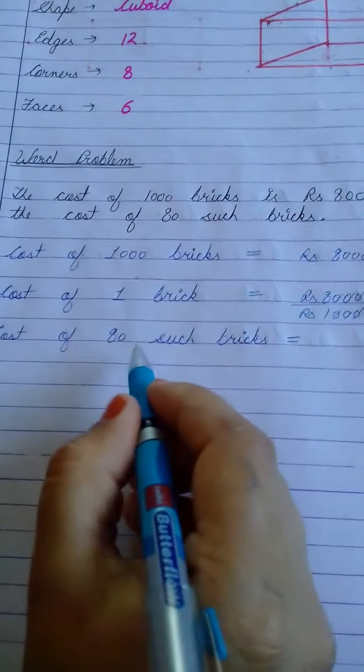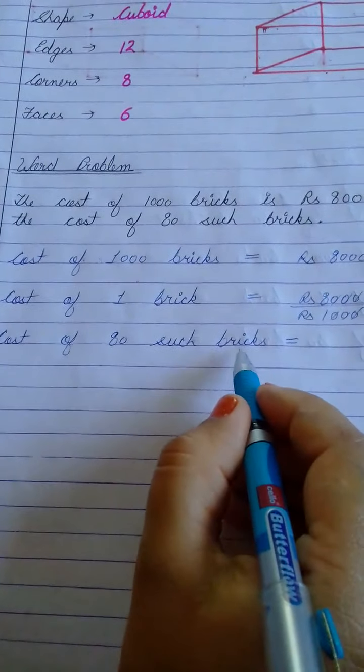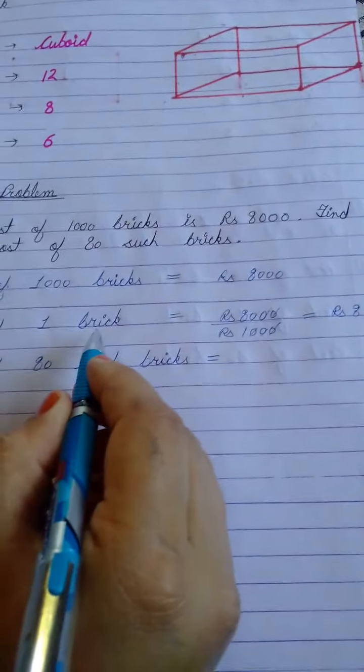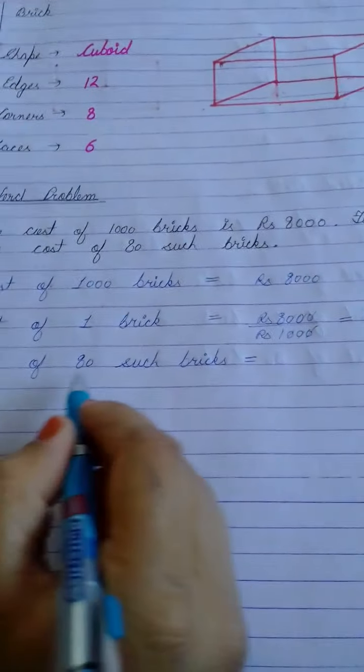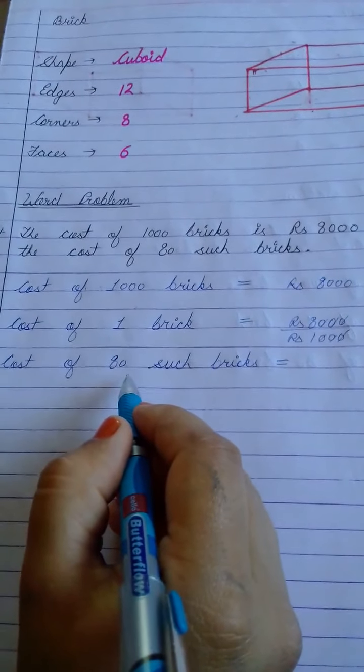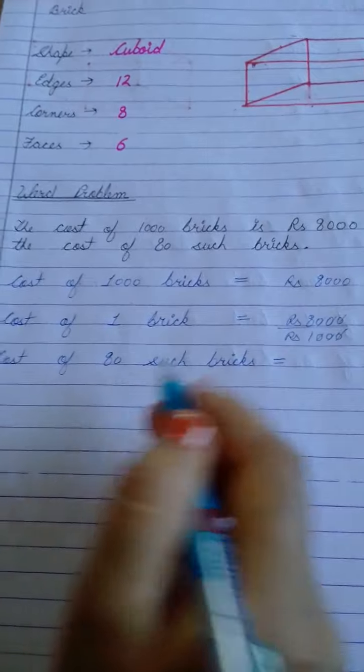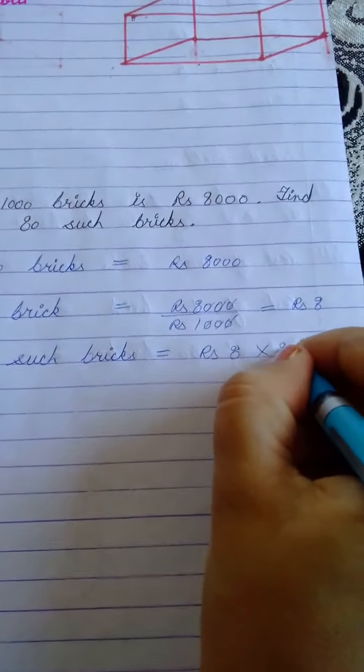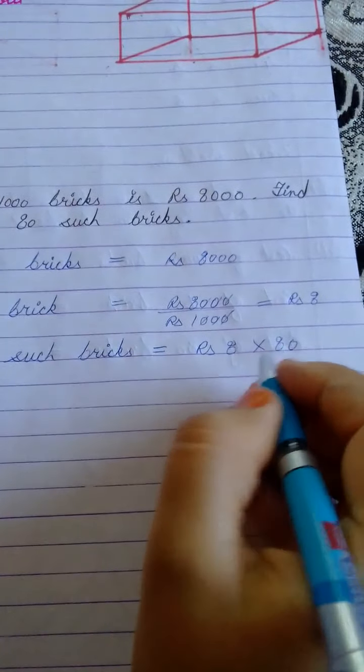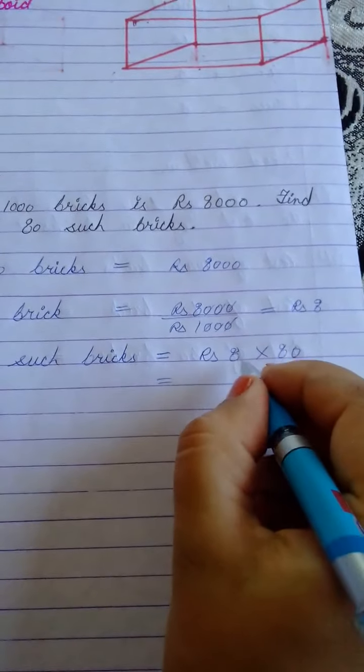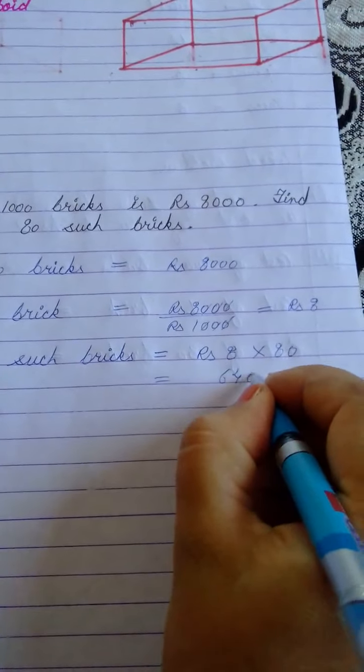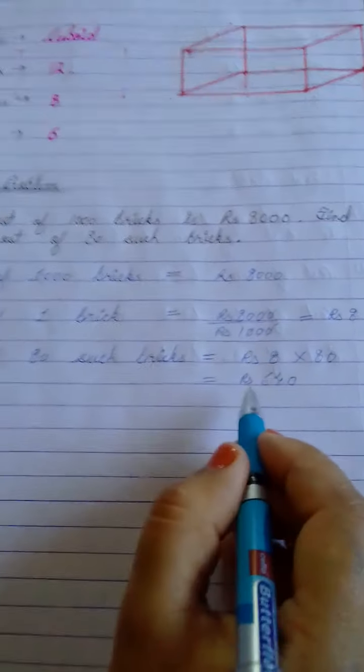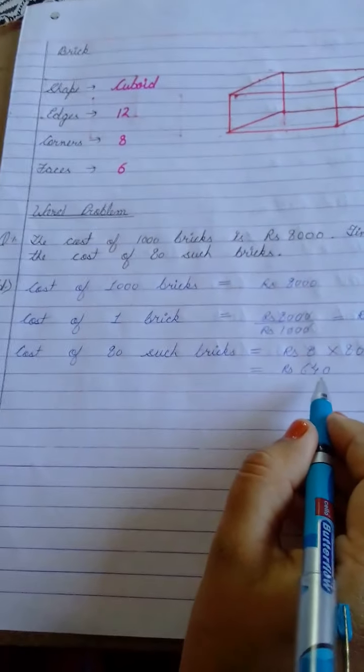Now you have to find the cost of eighty such bricks. Now the value of one is known to you. You know the cost of one brick that is rupees eight. And for calculating the value of more what do we do children? We always multiply. So the cost of one brick is rupees eight and you have to calculate the value of eighty bricks. So you will multiply eight by eighty. So eight times eight is sixty four and zero will be at the back. So this way the cost of eighty such bricks is rupees six hundred forty.